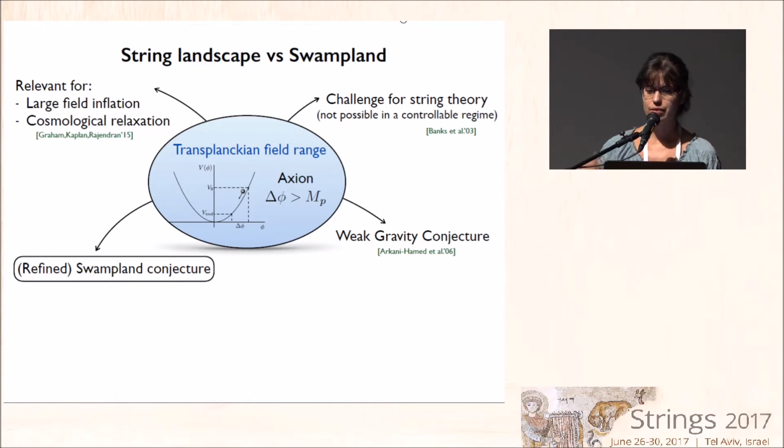And all the difficulties arising in doing this has led to think that maybe there is some underlying constraint from quantum gravity that forbids to have a transplanckian field range related to the weak gravity conjecture or something else. So in this talk, I'm going to talk instead about the refined swampland conjecture, the constraints that come from there.